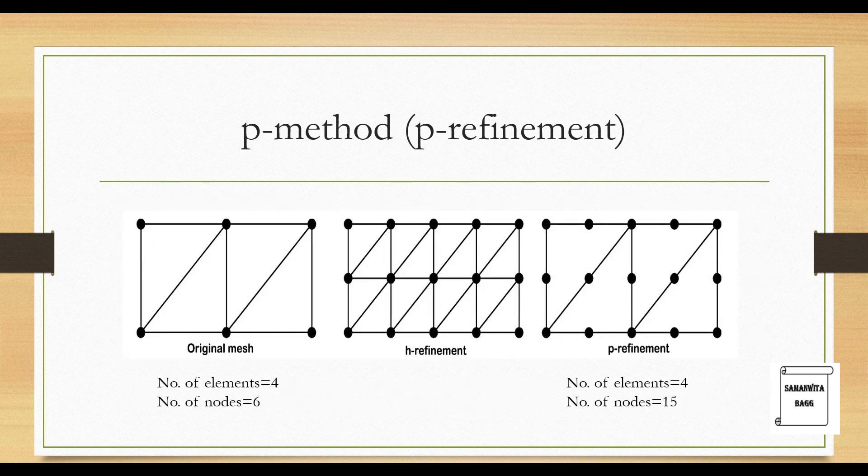So I'll show you a figure of P method. This is the original mesh as we have discussed and this is now the P refinement. You can see that the element size is still the same. It's just that the nodes have increased which means you are going for higher order polynomials. So here you can see the initial number of nodes were 6 and now it is 15. It is because of the higher order polynomial that you have used.